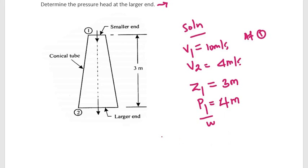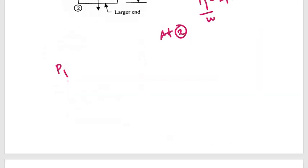Then at point two, P2 over W is to be calculated. z2 is equal to zero meters, v2 is equal to 4 meters per second.